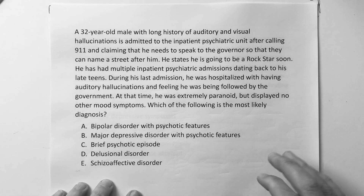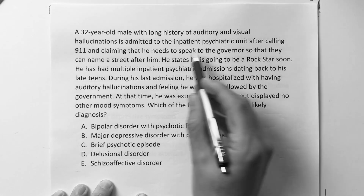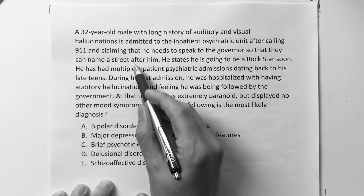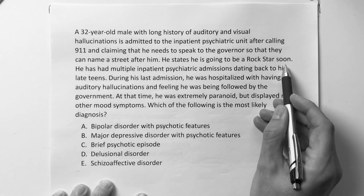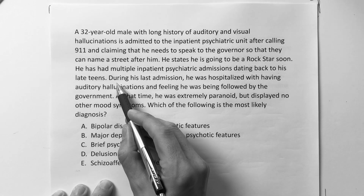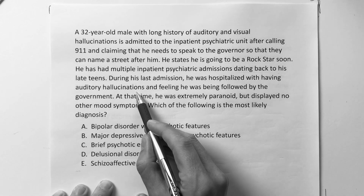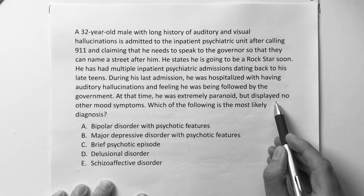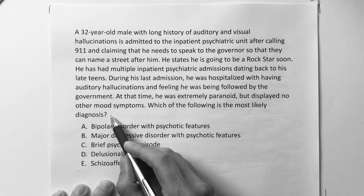A 32-year-old male with a long history of auditory and visual hallucinations is admitted to the inpatient psychiatric unit after calling 9-1-1 claiming he needs to speak to the governor so they can name a street after him. He states he is going to be a rock star soon. He has had multiple inpatient psychiatric admissions dating back to his late teens. During his last admission, he was hospitalized with auditory hallucinations and feeling he was being followed by the government. At that time he was extremely paranoid but displayed no other mood symptoms. Which of the following is the most likely diagnosis?